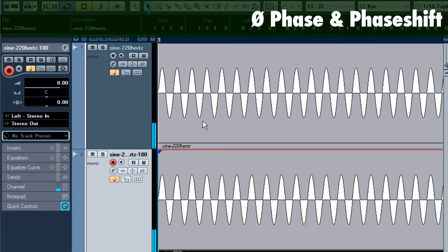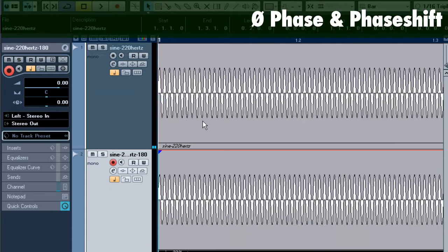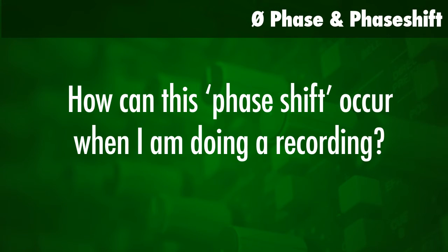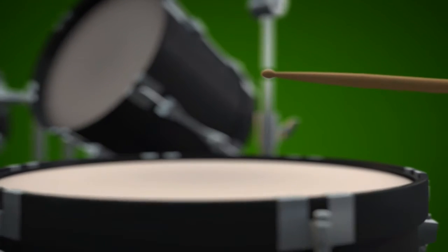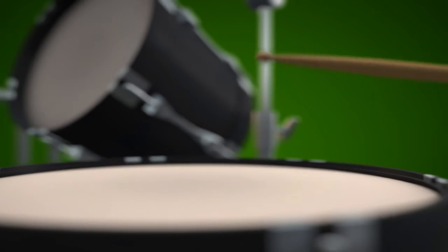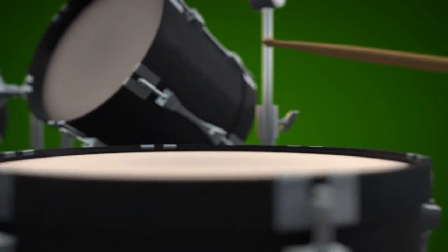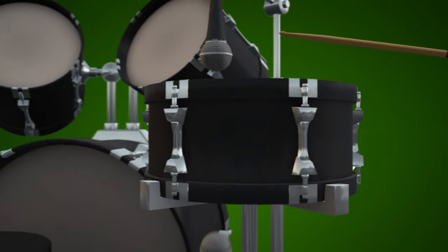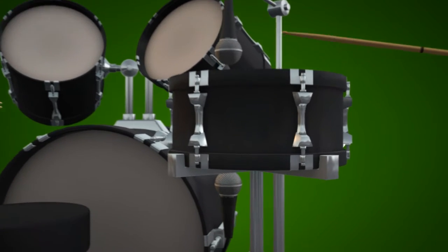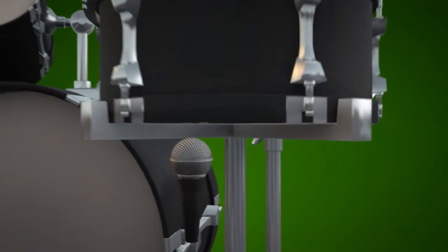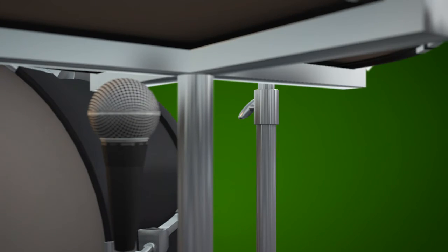So when does this phase shift occur when I'm doing a recording? A real simple example would be when we're going to be recording a snare drum. I made this illustration of when we hit the snare drum — there are many occasions in which we choose to record it from both sides, from the top as well as from the bottom.